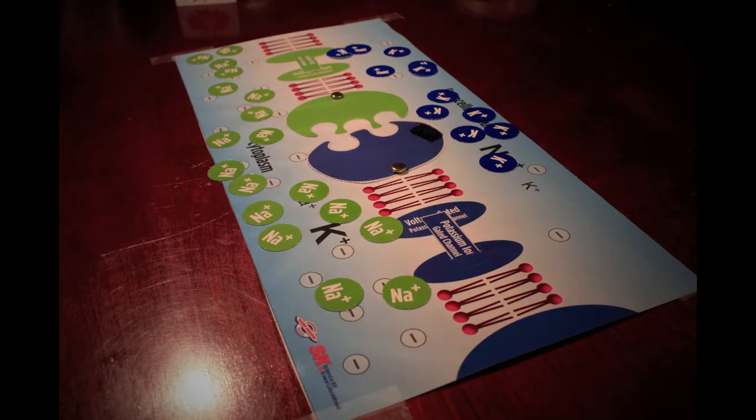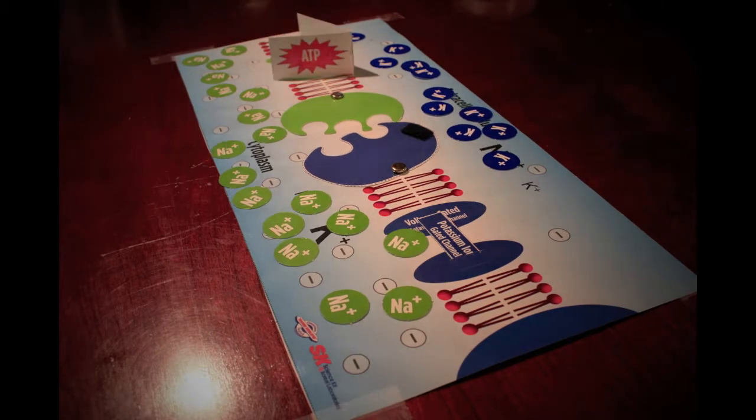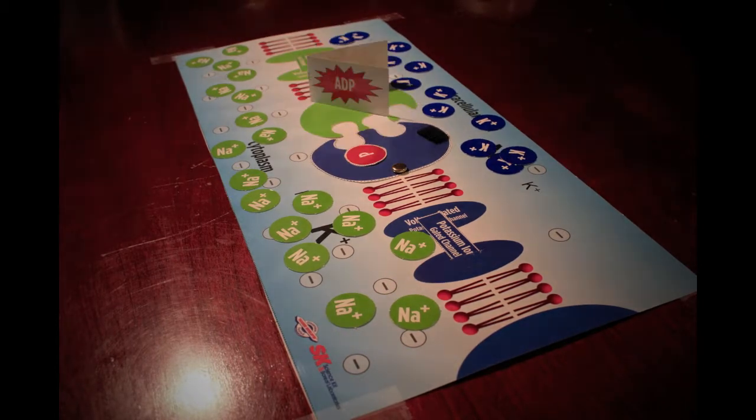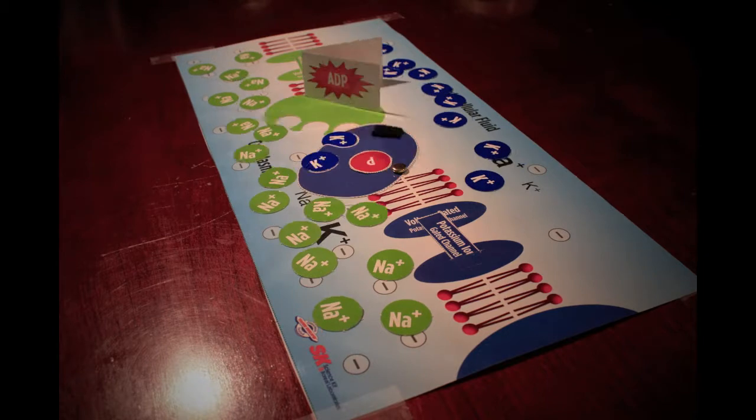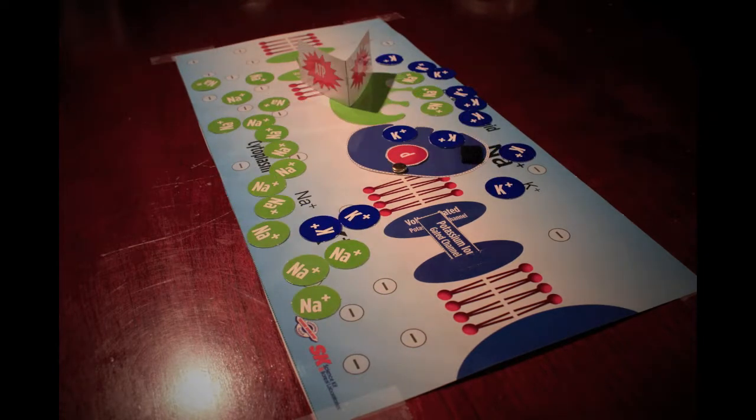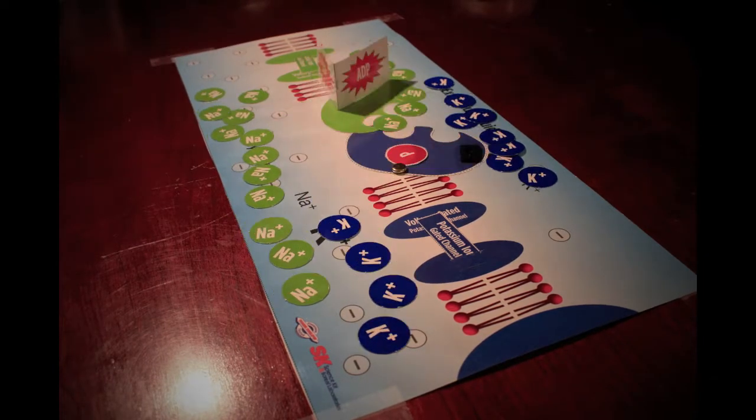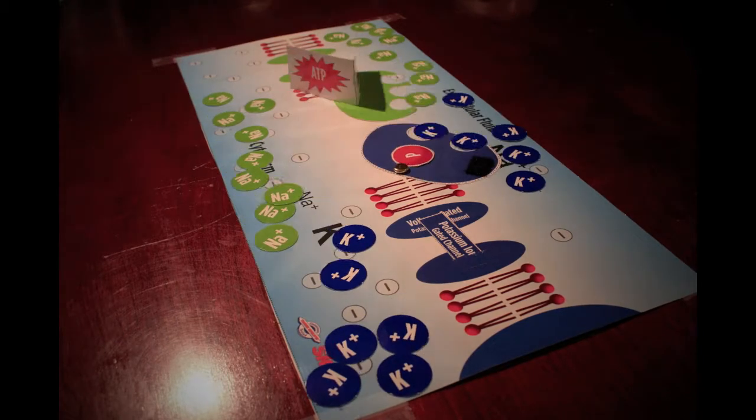Now, ATP attaches to the sodium ion pump and hydrolyzes into ADP and a phosphate, releasing energy. This energy is used to pump three sodium ions out of the cell and two potassium ions into the cell, which restore the cell to its resting potential.